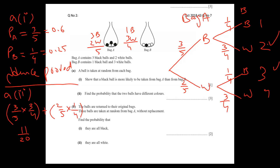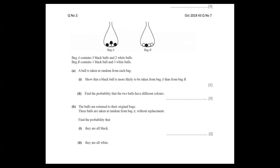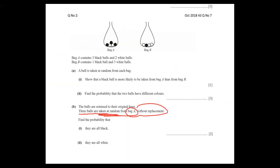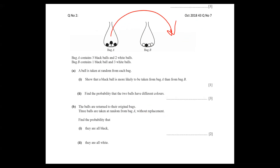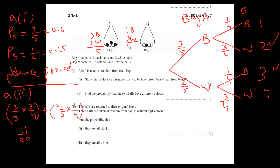Part (b): The balls are returned to the original bags — so reset everything back to the start. Three balls are now taken at random from Bag A only, without replacement. No concern with Bag B here. Without replacement means each ball taken out is not put back, so the total reduces with each draw.